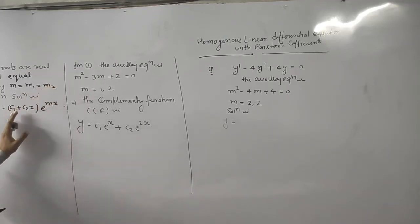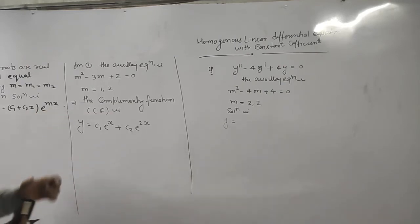Suppose three roots are equal, then c1 plus c2x plus c3x square. Four roots are equal, c1 plus c2x plus c3x square plus c4x cube and so on. And outside, always e to the power mx. So what is the solution here?